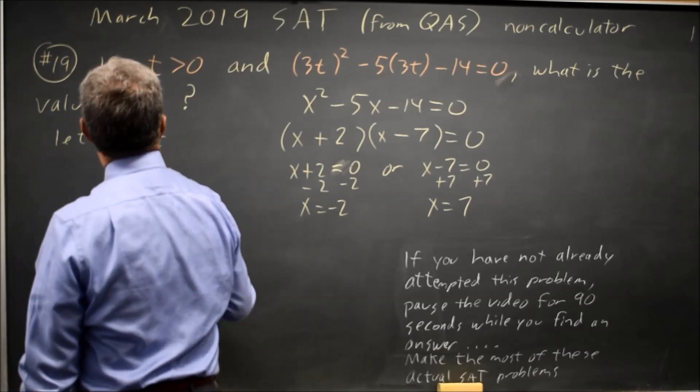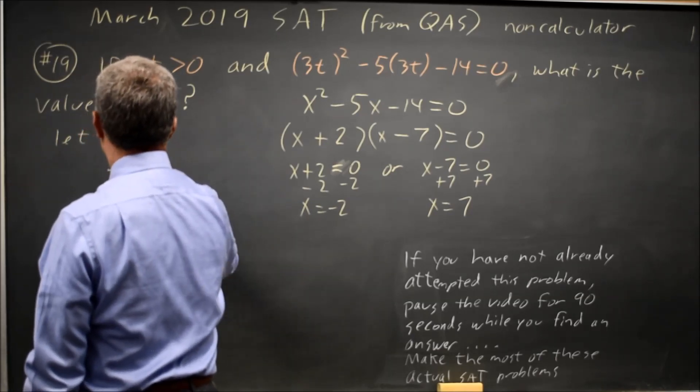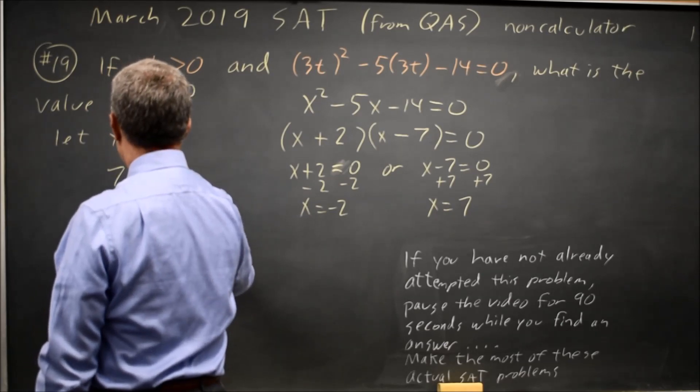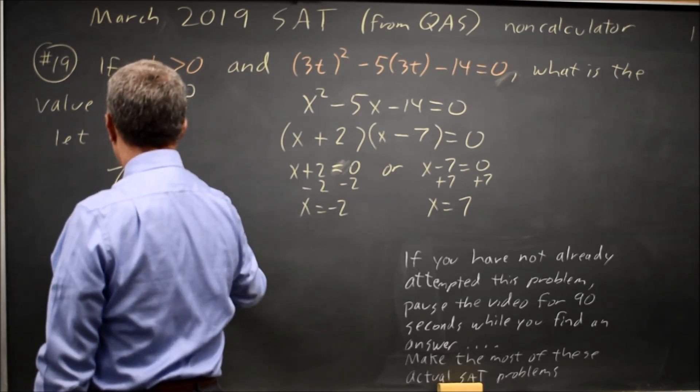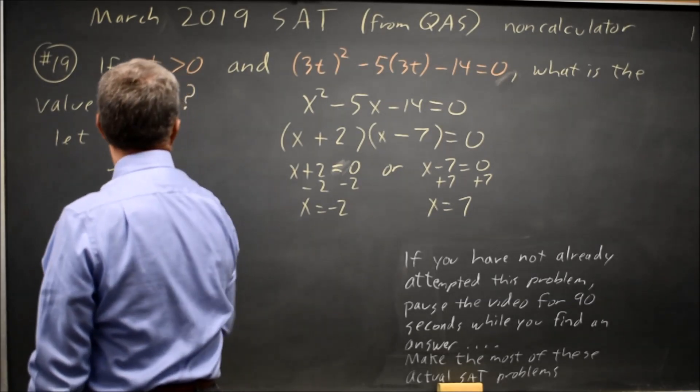But I'm not looking for x, I'm looking for the value of t. If x equals 7, then 7 equals 3t. Getting t by itself, I'll divide both sides by 3, and t equals 7 over 3. And that would be the answer.